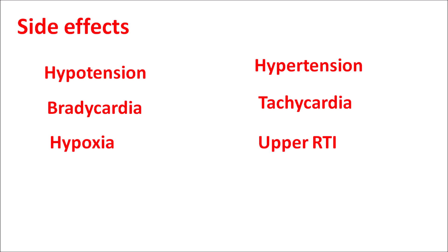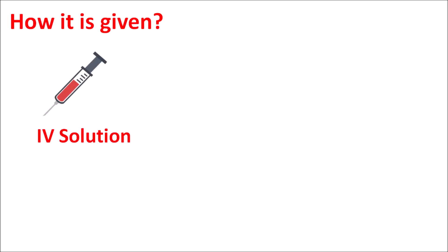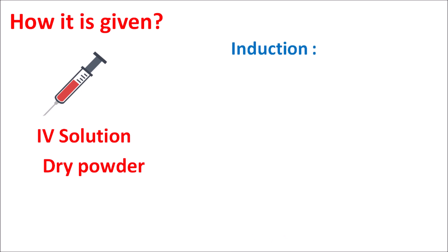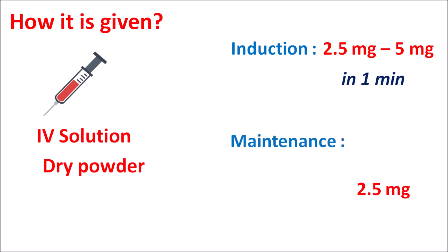Remimazolam is available as an IV solution and also as a dry powder for reconstitution. For induction of sedation, it is given at a dose range of 2.5 to 5 mg over one minute. For maintenance, it is given at 2.5 mg within 15 seconds.